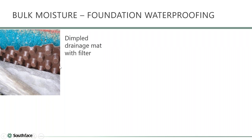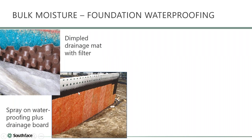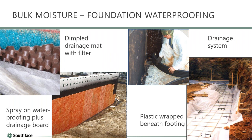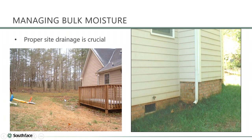Some product examples: dimpled drainage board with filter cloth. The Southface building built in the mid-90s used an ICF foundation wall, waterproofing, a drainable fiberglass board for drainage and insulation, and drain tile. A photo shows a footing wrapped in plastic. The site grading is critical — if a hard rain loads up the foundation with moisture, you'll get extra A/C runtime to dry it out and likely rot problems.